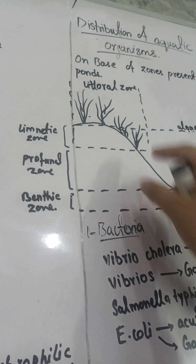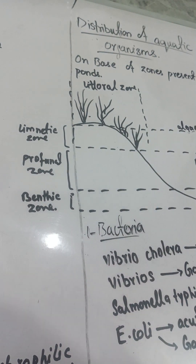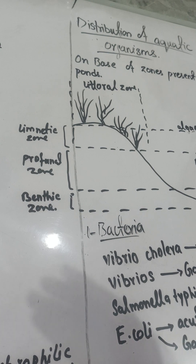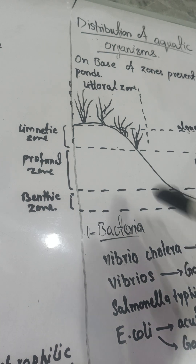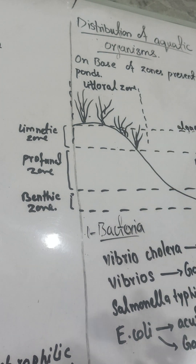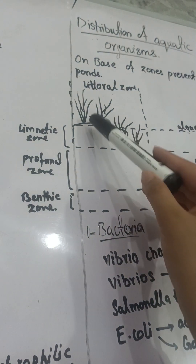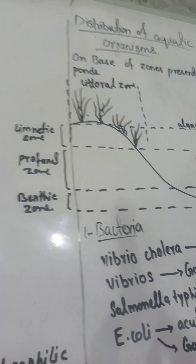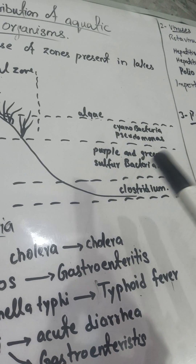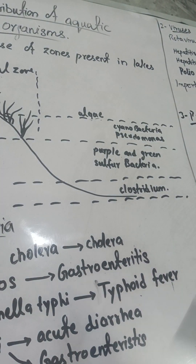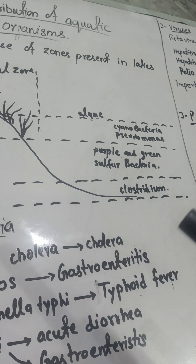The littoral zone is the part where plants are present. This zone receives a lot of sunlight and the plants grow best here. The second zone is the limnetic zone, which consists of algae, cyanobacteria, and Pseudomonas bacteria. Mostly these bacteria and algae are photosynthetic, so they directly gain sunlight and produce their own food.